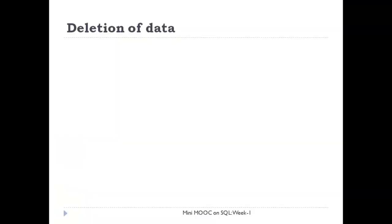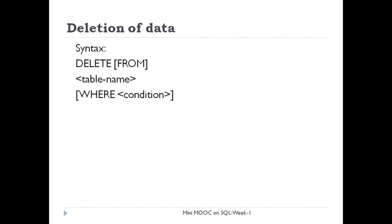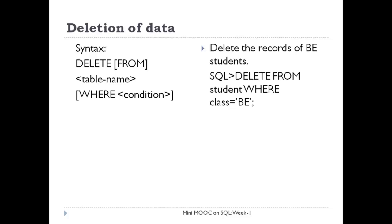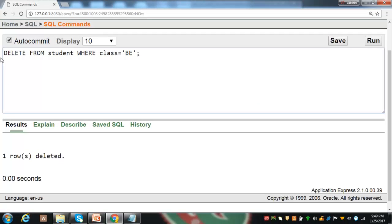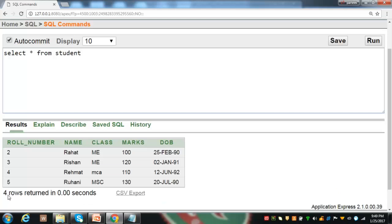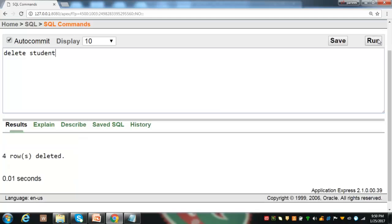Now it is time to delete some unwanted data from the table. For this, we can use the DELETE statement and its syntax is DELETE FROM table name WHERE condition. FROM and WHERE are optional. To remove the record of the BE student, we can use DELETE FROM student WHERE class = 'BE'. Let us execute this statement — one row has been deleted. We can use SELECT to verify the result. Row number one of the BE student has been removed. To delete all the records of this table, we can use DELETE student and it will remove all the records.